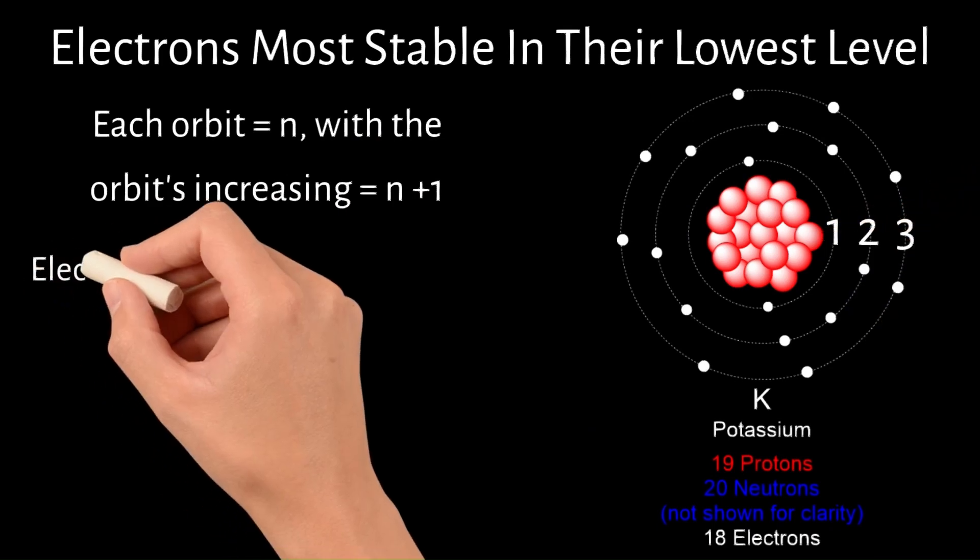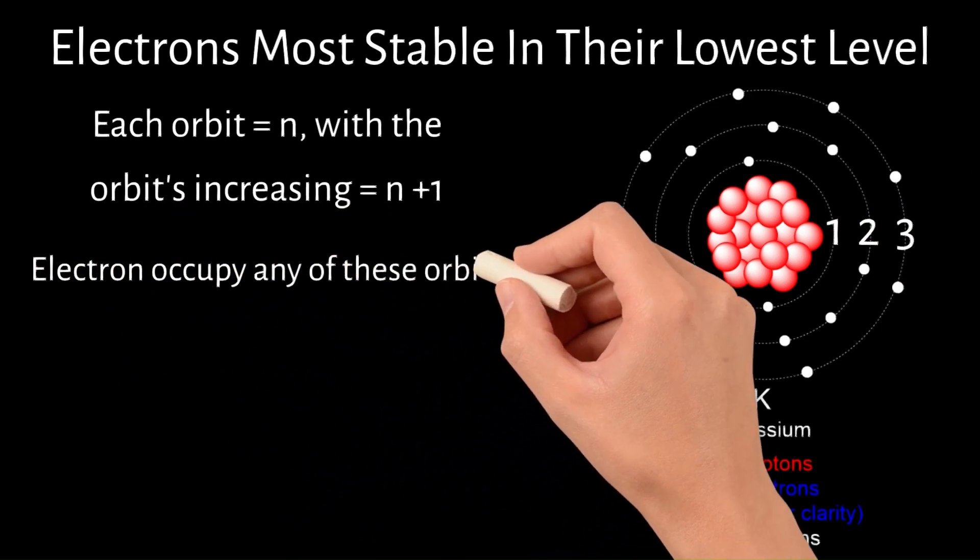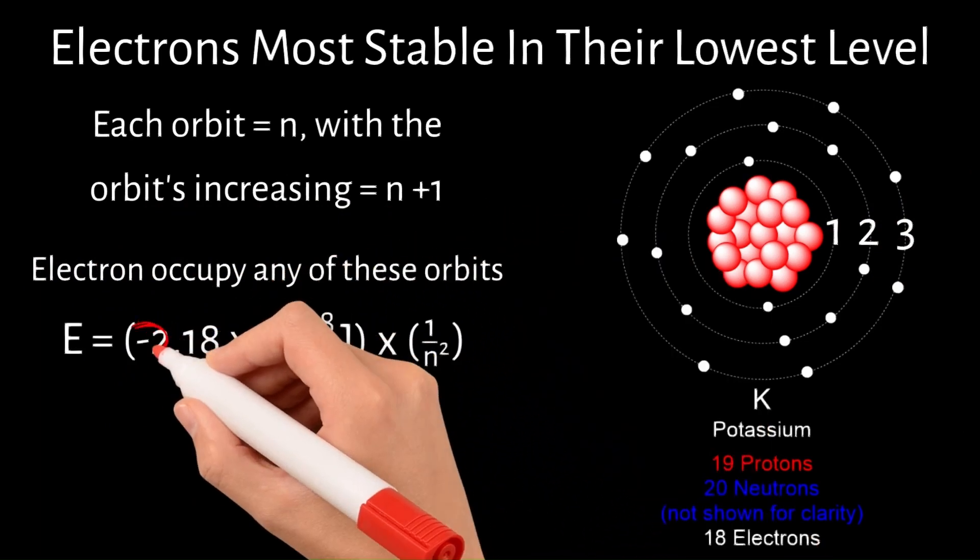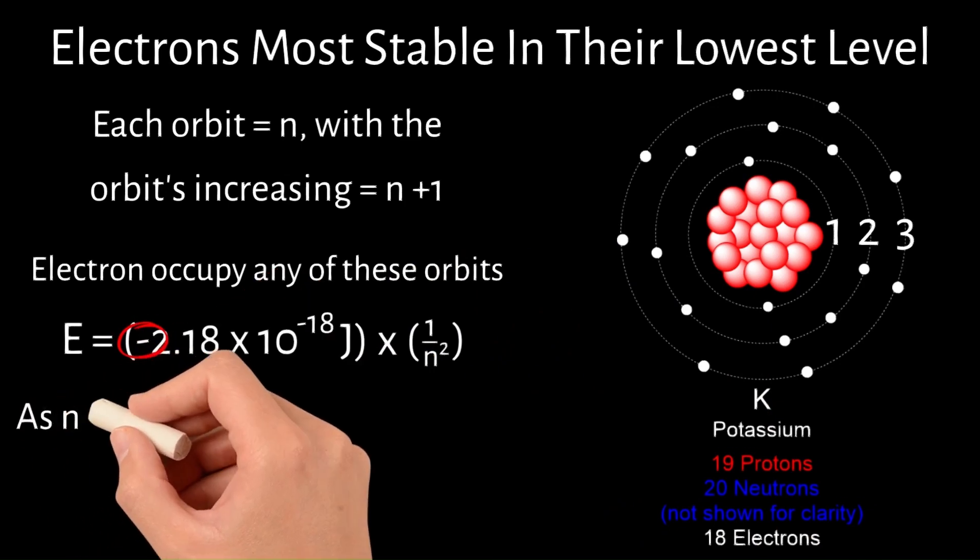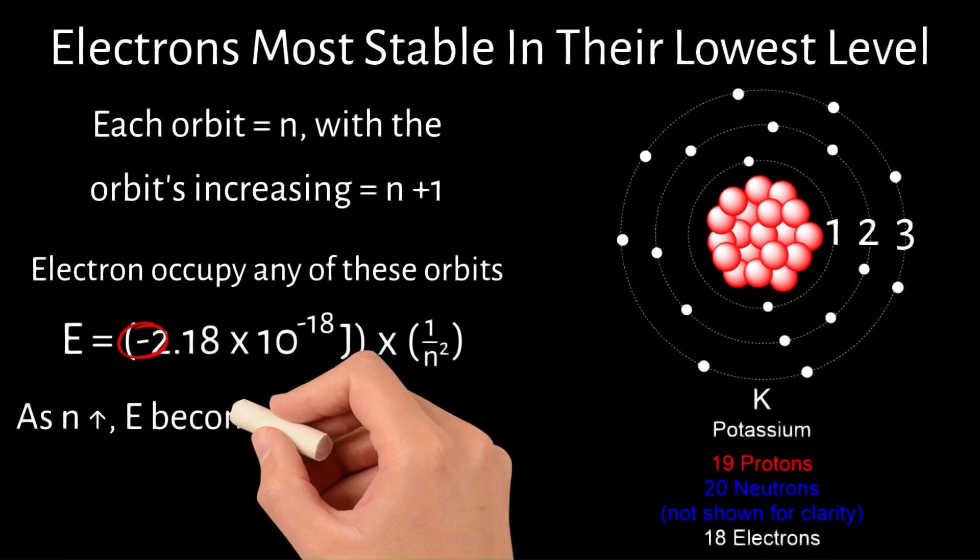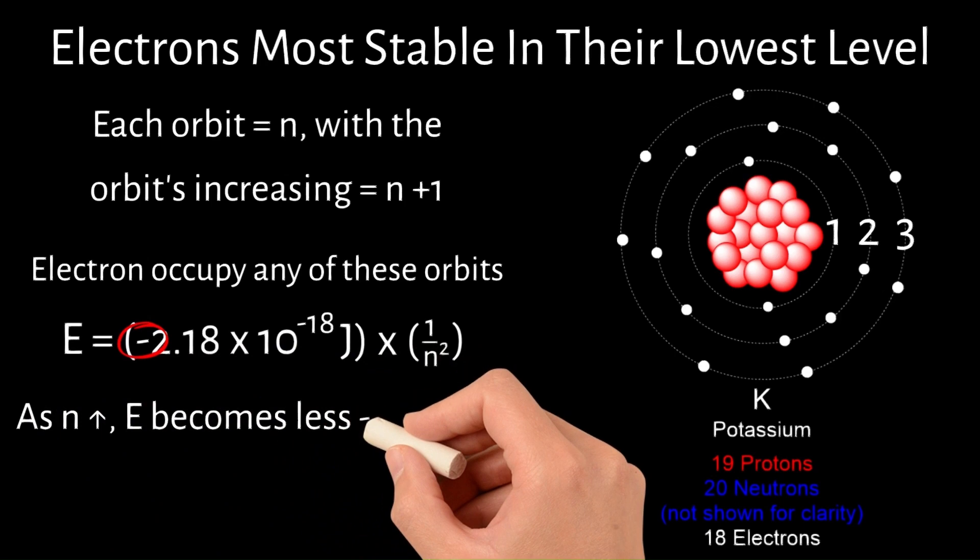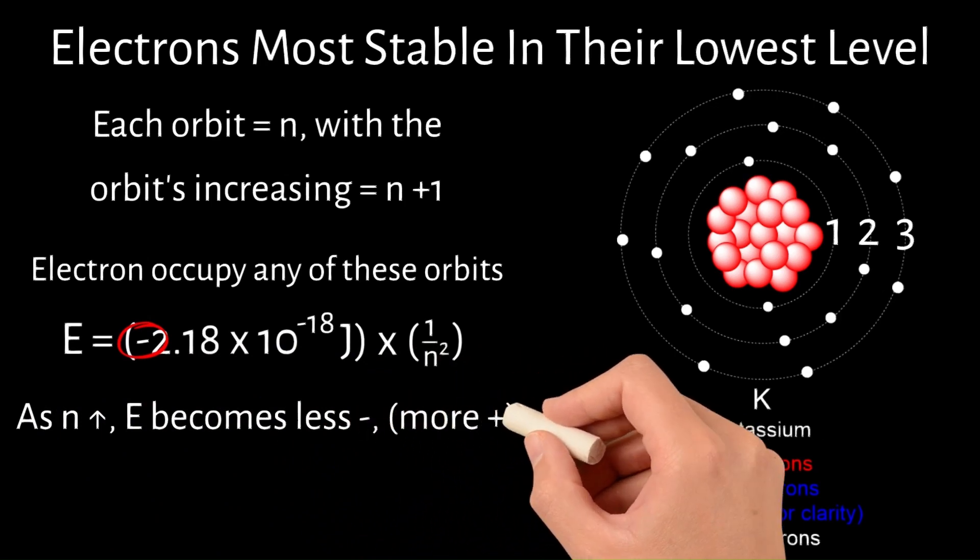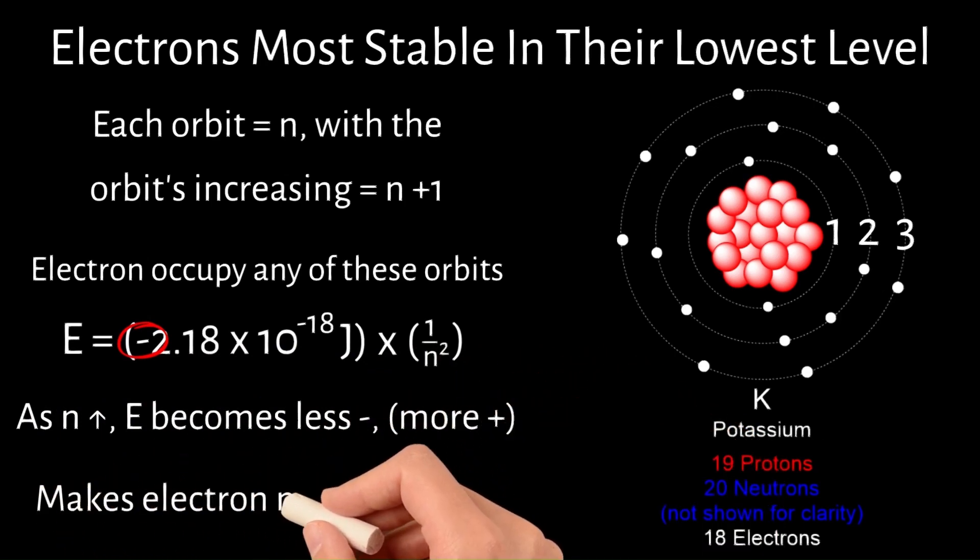An electron within the atom can occupy any of these orbits, and due to the equation, the electron's energy in each orbit is negative. As N, the principal quantum number, increases, the energy becomes less negative and therefore more positive, thereby making the electron more unstable.